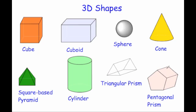And finally, we've got a pentagonal prism. It's called a prism because if you cut it anywhere vertically, you get that pentagon shape the whole way through. It's called pentagonal because it's got a pentagon at the front and at the back, and then the rest of the sides are rectangles.